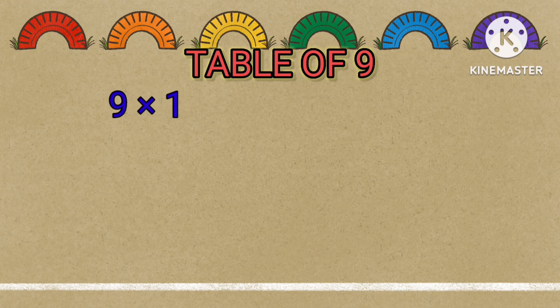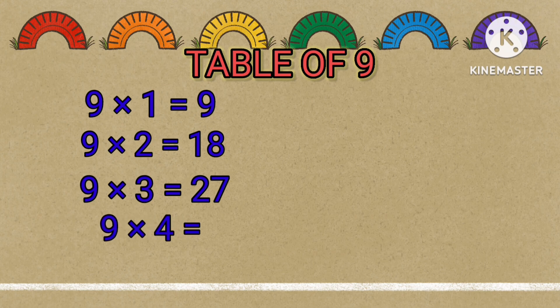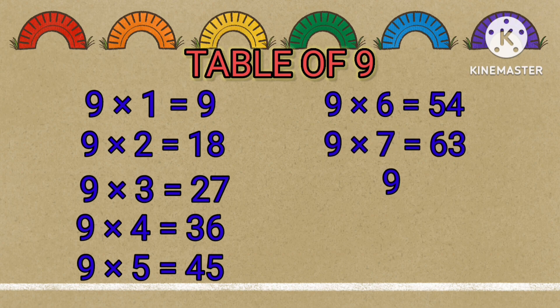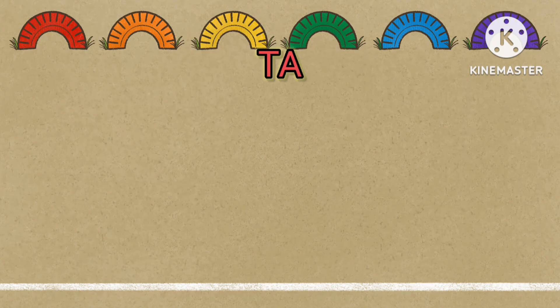Table of 9: 9 times 1 equals 9, 9 times 2 equals 18, 9 times 3 equals 27, 9 times 4 equals 36, 9 times 5 equals 45, 9 times 6 equals 54, 9 times 7 equals 63, 9 times 8 equals 72, 9 times 9 equals 81, 9 times 10 equals 90.